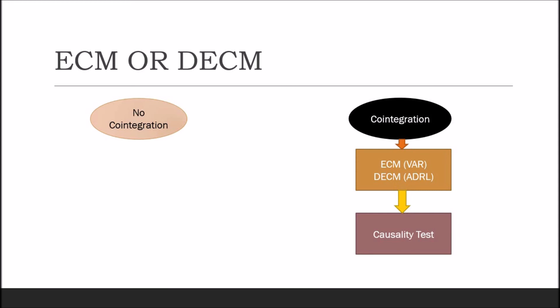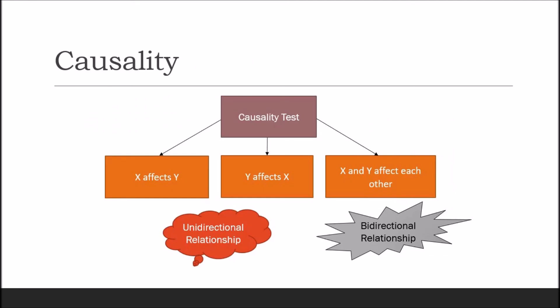ARDL provides estimates for both short-run and long-run relationships. Next, you need to test causality. If two variables y and x are co-integrated, there may exist any of three relationships: number one, x affects y; number two, y affects x; or number three, x and y affect each other. The first two show a uni-directional relationship while the third shows a bi-directional relationship.